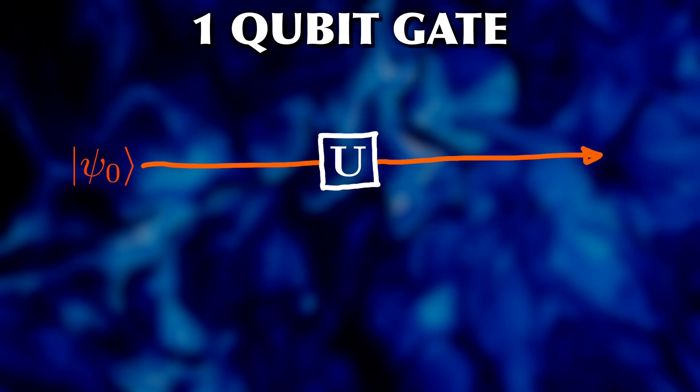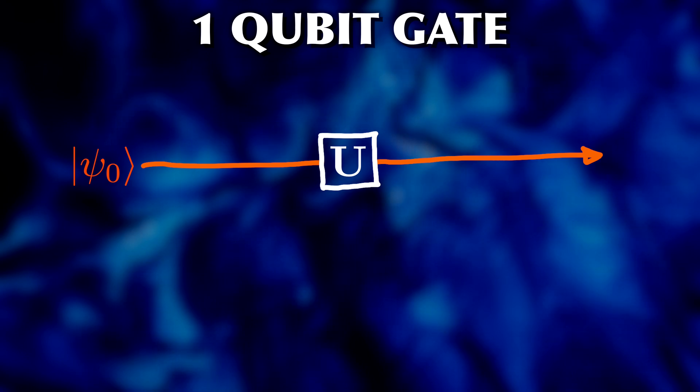We spent all of last video talking just about quantum bits. So now it's time to do some actual quantum computation. This is the basic idea of a quantum circuit. You read it from left to right, like a sentence.